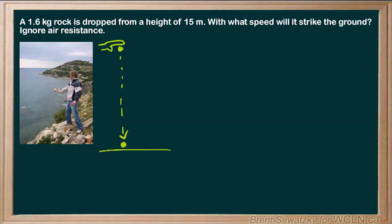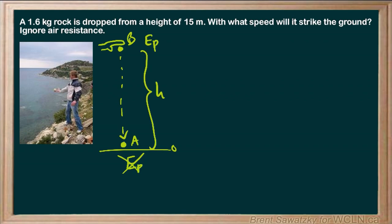Let's call this our 'before' and this is our 'after' at the end of our situation. In the before, the rock is up at a height — we'll use the ground as zero — so we're 15 meters up. It definitely has potential energy, and as it drops, that potential energy gets less and less until it's just about to hit the ground, where the height is zero and therefore there's no potential energy.